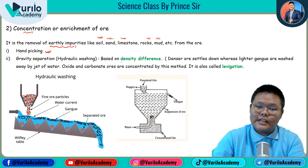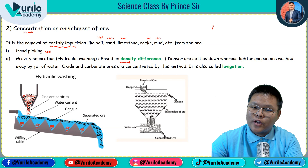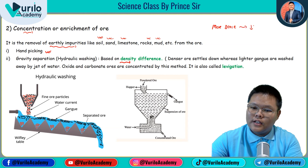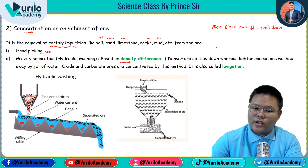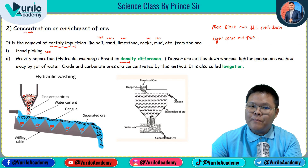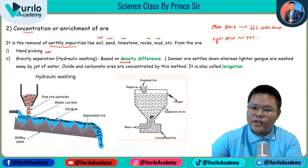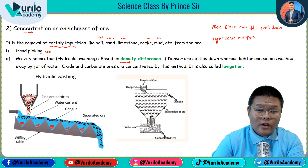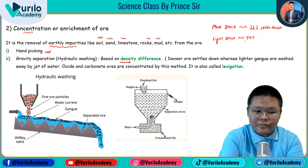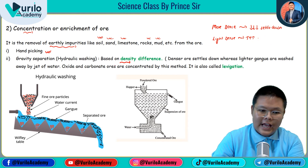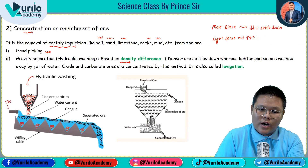Another method is gravity separation, where we use hydraulic washing. This is based on the density difference between the ore and the impurities. The more dense particles settle down, while the lighter gangue particles can easily flow away and be washed away. Water is used continuously in this gravity or hydraulic washing process.